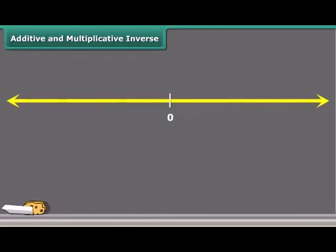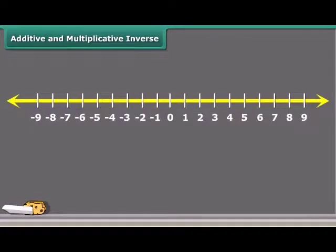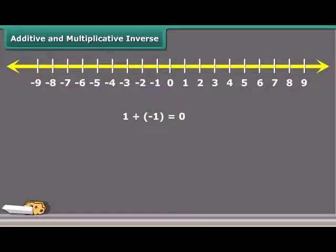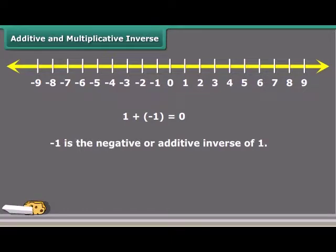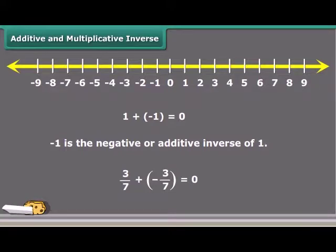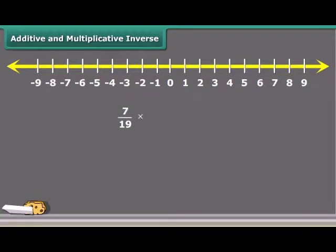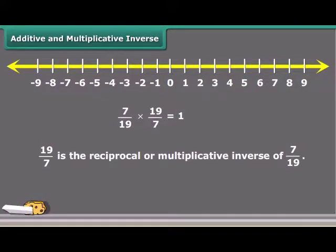You may have come across negative numbers. Is minus 1 the negative of 1? Yes, because 1 plus minus 1 equals 0. So minus 1 is the negative or additive inverse of 1. Likewise, for any rational number such as 3 by 7, minus 3 by 7 is its additive inverse. By which rational number would we multiply 7 by 19 to get a product of 1? It is 19 by 7, so 19 by 7 is the reciprocal or multiplicative inverse of 7 by 19.